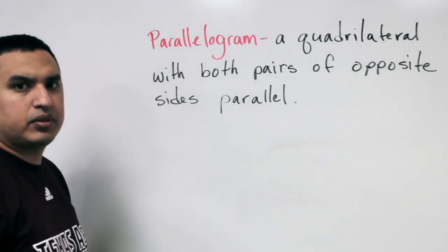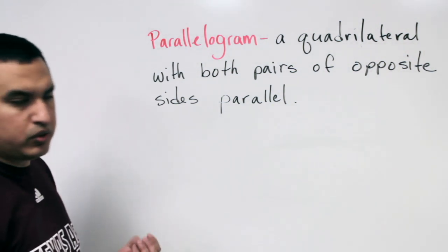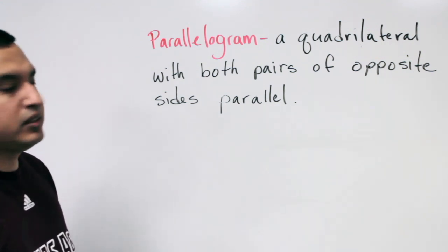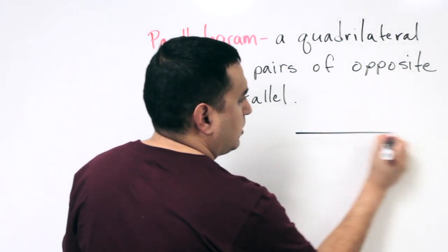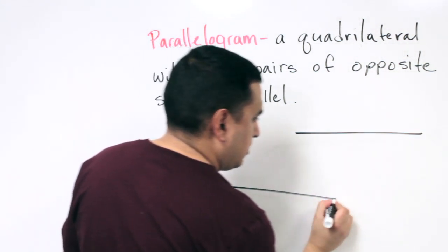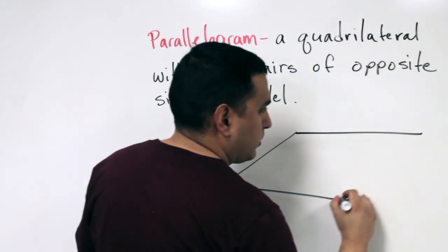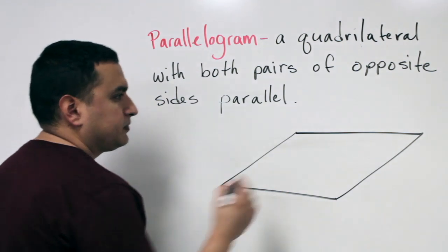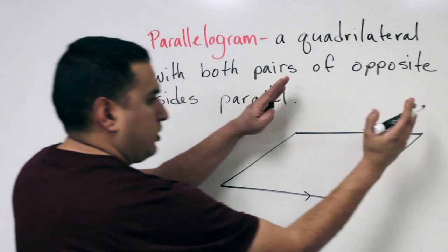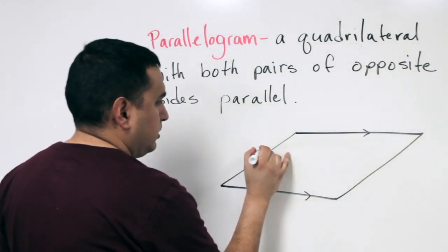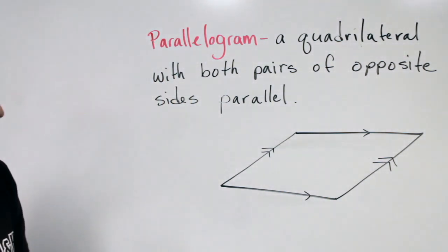The first vocabulary word is a parallelogram. It's simply a quadrilateral, which is a four-sided shape, with both pairs of opposite sides parallel. So if I draw two horizontal lines, kind of staggered, and then connect those two sides, these two would be parallel to each other, and the two slanted sides would also be parallel to each other. This would be an example of a parallelogram.